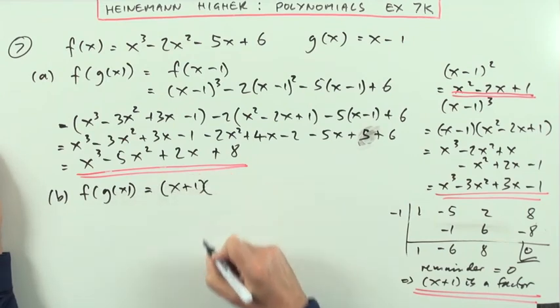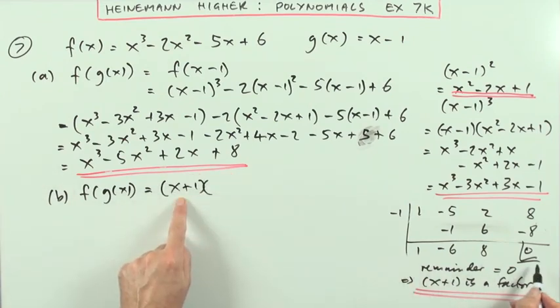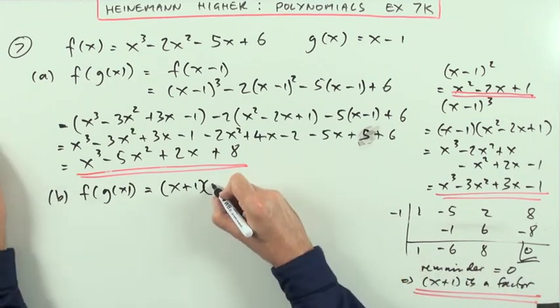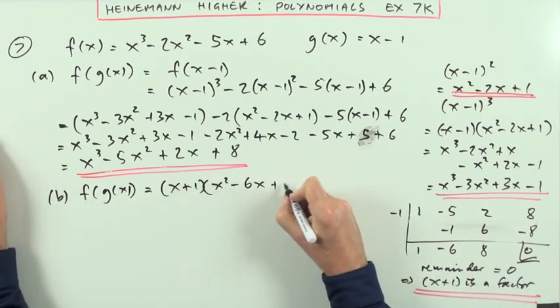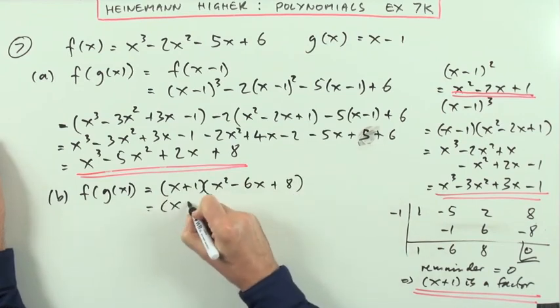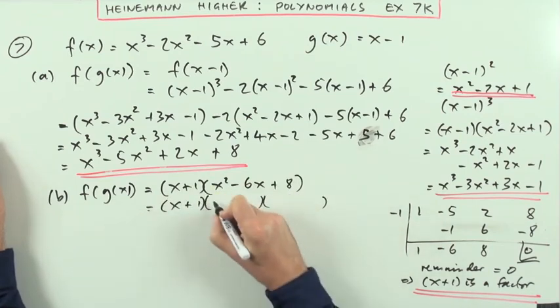So a factorisation is going to be this. I've got (x plus 1) was a factor. And since it's a factor, the remainder is 0. That must be the quotient. So that must be the remaining factor, the quadratic factor, which I then just factorise myself by inspection.